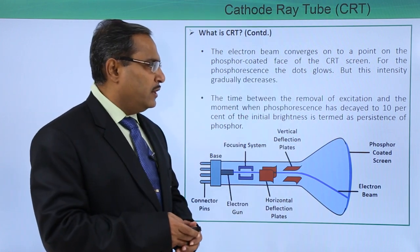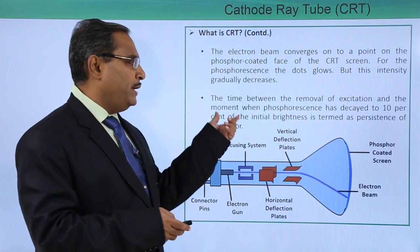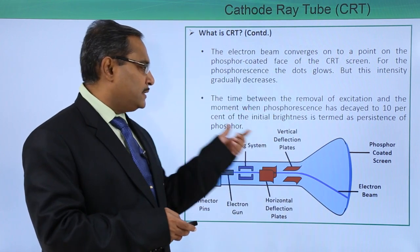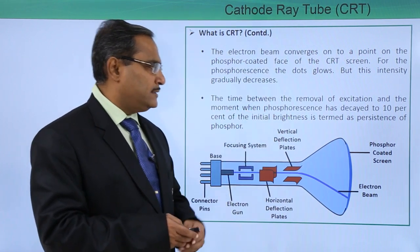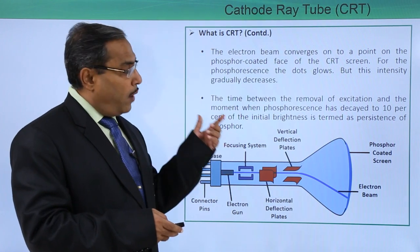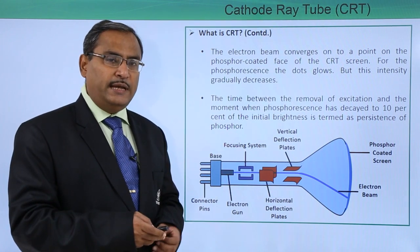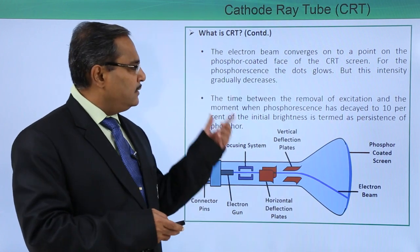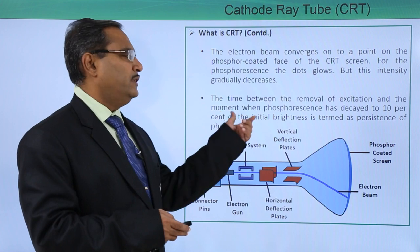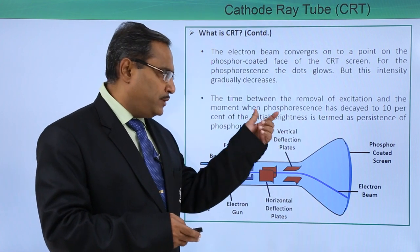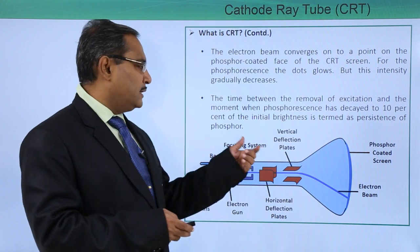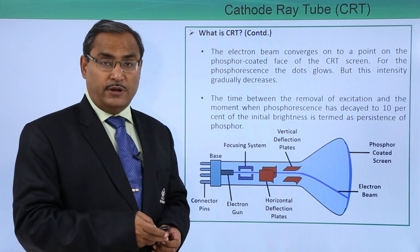The time between the removal of excitation and the moment when the phosphor has decayed to 10 percent of the initial brightness is termed as the persistence of phosphor. So the persistence of phosphor is defined as the time from removal of excitation until the phosphor has decayed to 10 percent of its initial brightness.